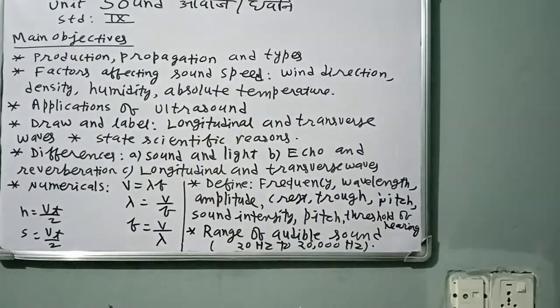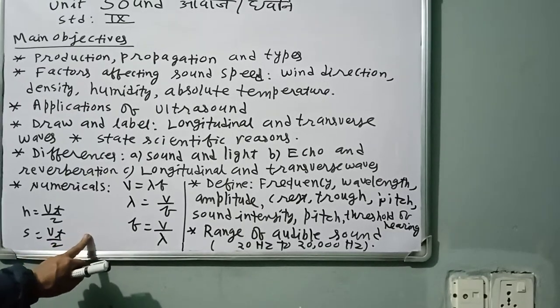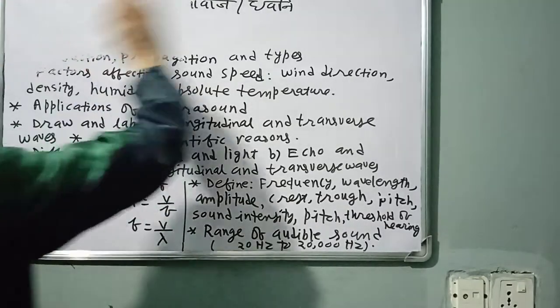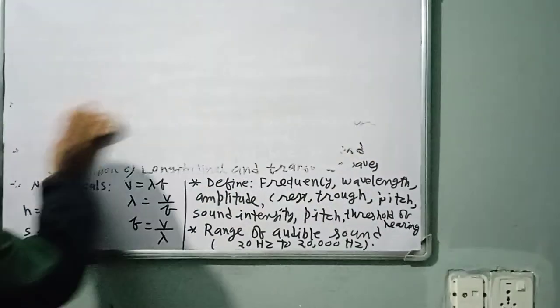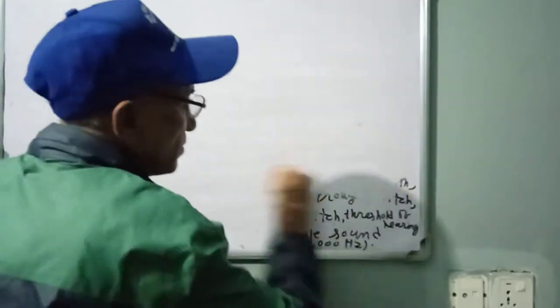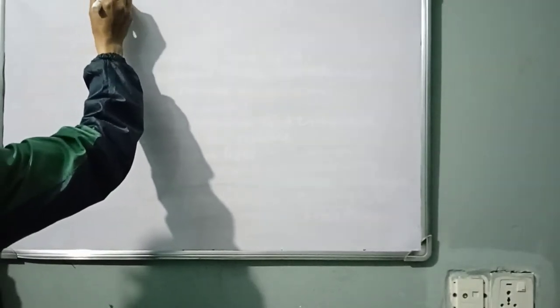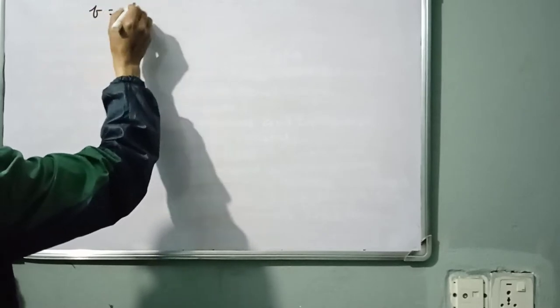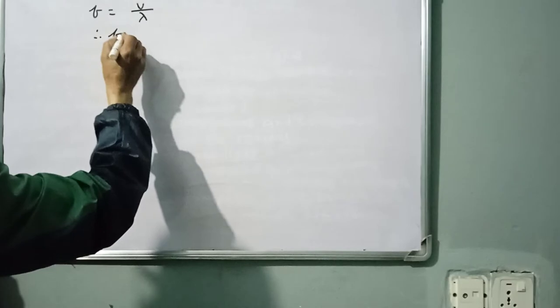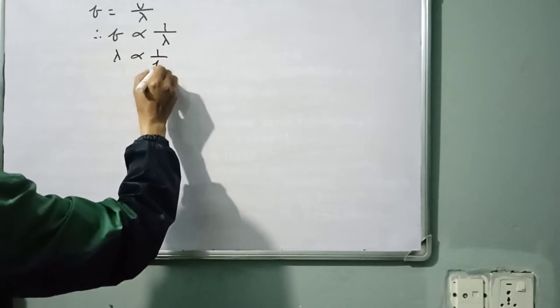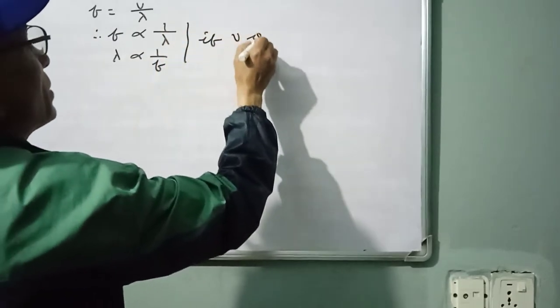The relation between frequency and wavelength: lambda equals v divided by f, and f equals v divided by lambda. We know frequency is inversely proportional to wavelength, and wavelength is inversely proportional to frequency — this holds when velocity is constant.